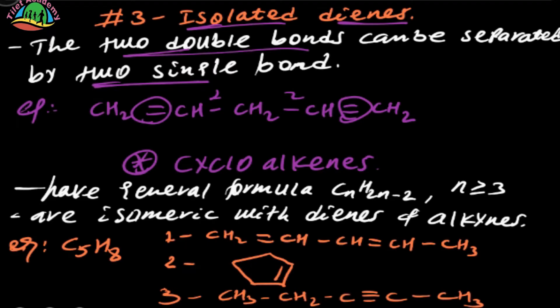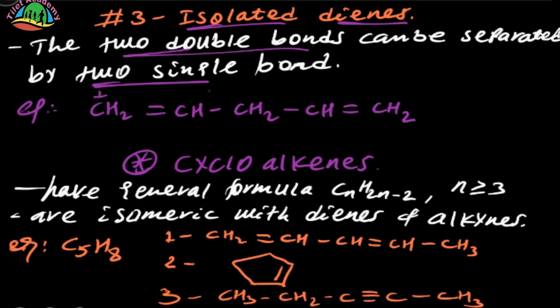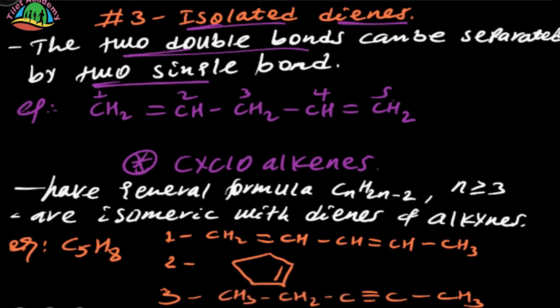For Isolated Dynes, the chain can have five carbons. We can number them: 1, 2, 3, 4, 5. The double bonds are at positions separated by more than one single bond.